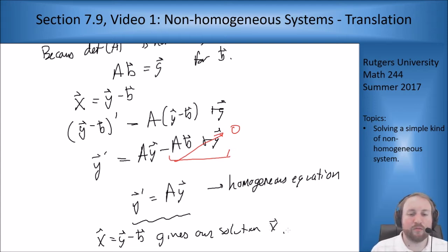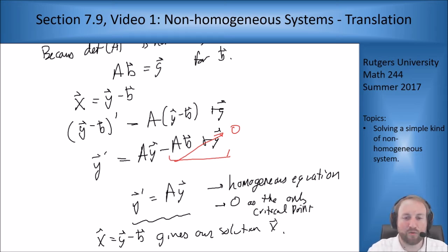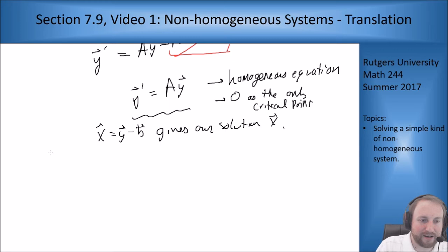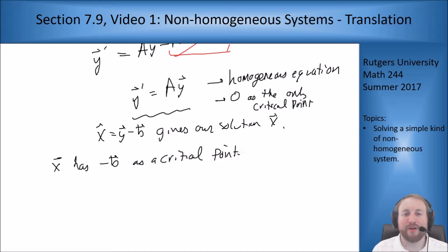So what really is going on here? Well we know for y prime equals ay this is a homogeneous equation. But since a is invertible this has zero as the only critical point, and it has a certain form so it's a source or a nodal sink or a saddle point. But zero is my critical point. If I do x equals y minus b, what this means is that now x has negative b as a critical point.